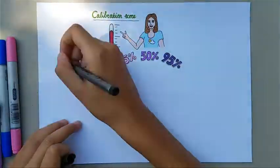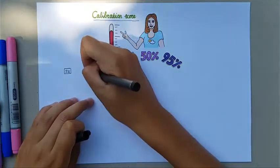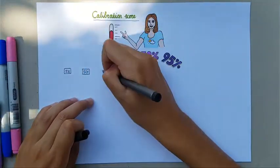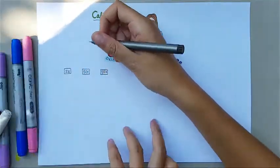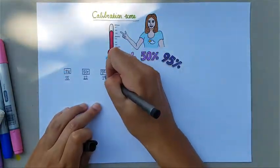Let's say her assessments are 15 for the 5% quantile, 22 for the 50% quantile, and 27 for the 95% quantile.